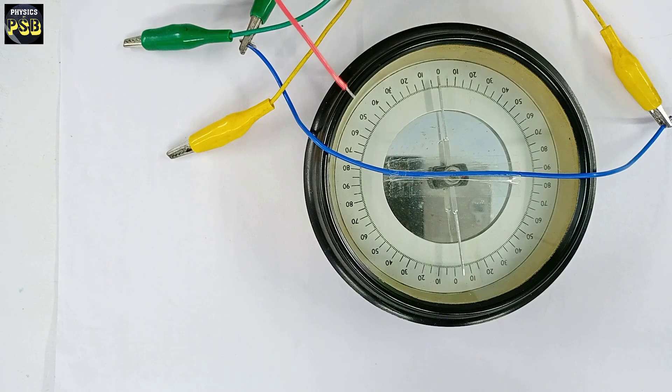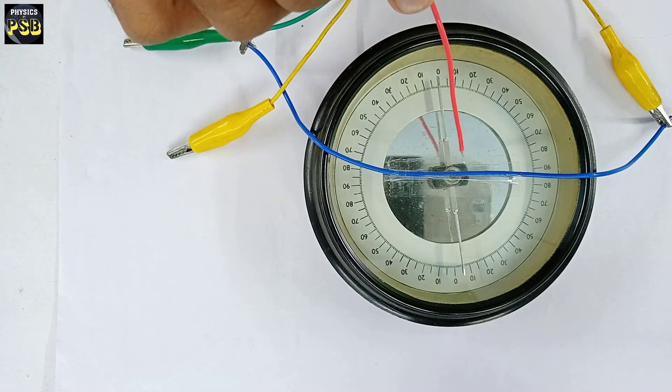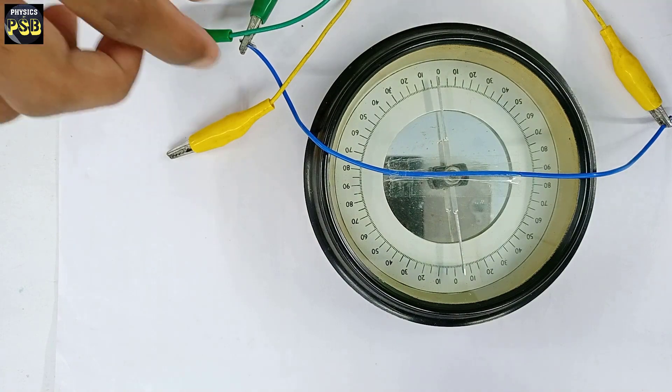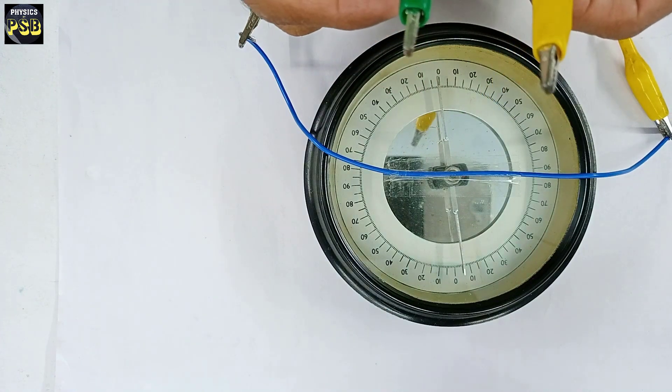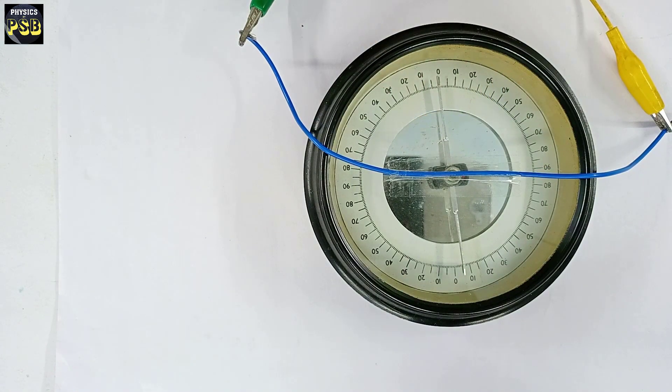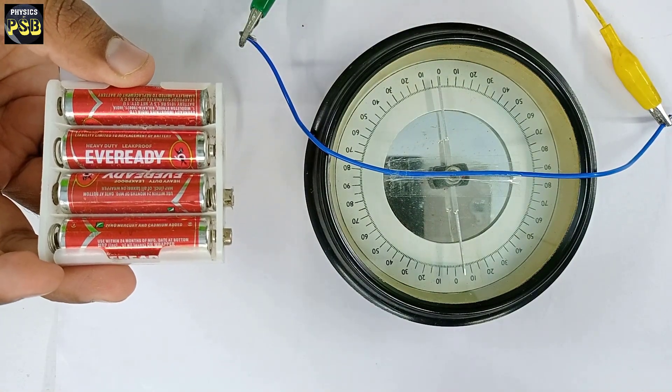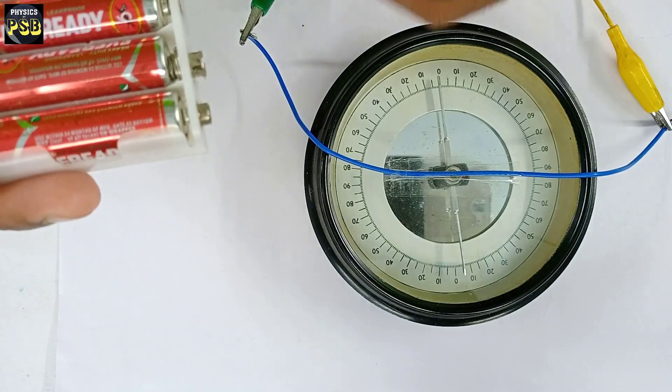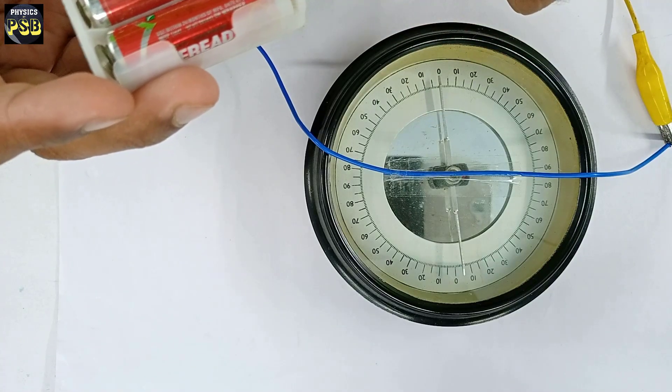Here I have a magnetic compass on which I have fixed a wire exactly above the magnetic needle. The two ends of this wire is connected to two crocodile clips. Now I am going to pass the current through this wire with the help of a battery which can supply 6 volt and 4.8 milliampere current.